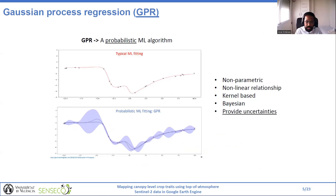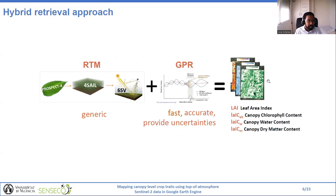The core algorithm used in this study is the kernel-based Gaussian Process Regression. This is a non-parametric method, meaning it is not limited by a specific function form. Rather than calculating the probability distribution of parameters of a specific function, GPR calculates the probability distribution over all admissible functions that fit the data. Summarizing, hybrid methods combine the generic properties of physically-based models together with the flexibility and computational efficiency of machine learning regression algorithms. This approach enables the potential to achieve both accurate and fast retrievals, even providing uncertainties with the GPR.